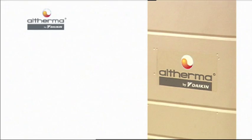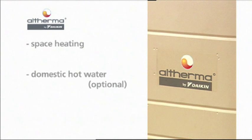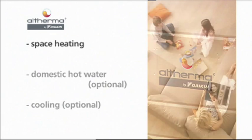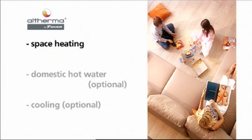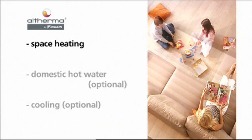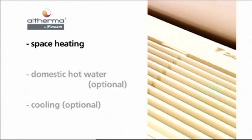The Altherma system goes beyond other heating systems, since it gives end users space heating and the options of domestic hot water and cooling mode. Altherma brings water to temperatures of 25 to 50 degrees Celsius suitable for residential heating.